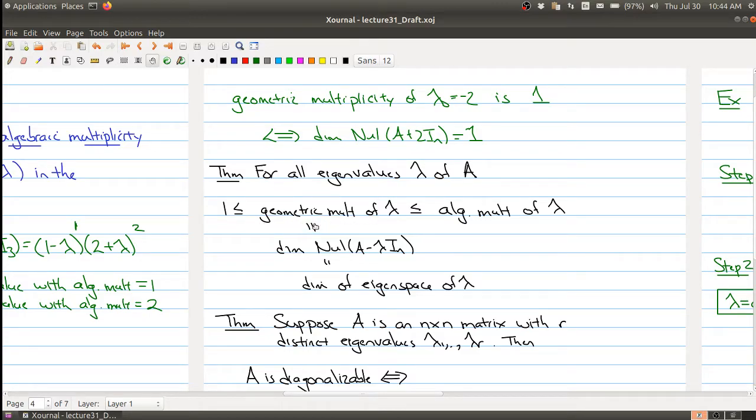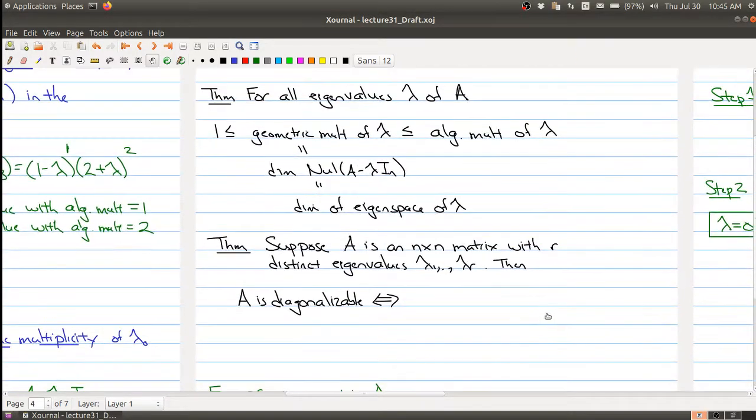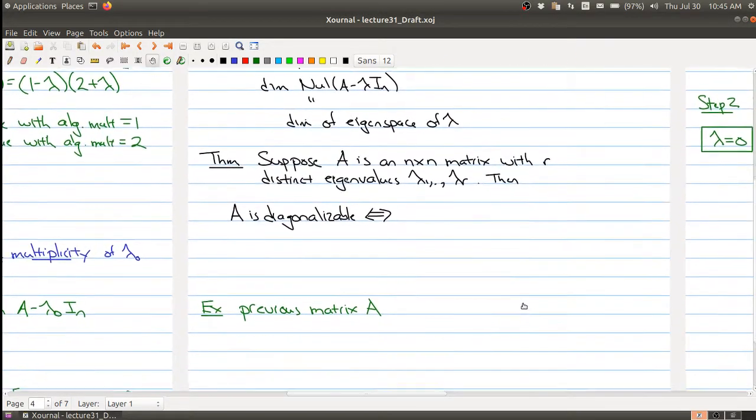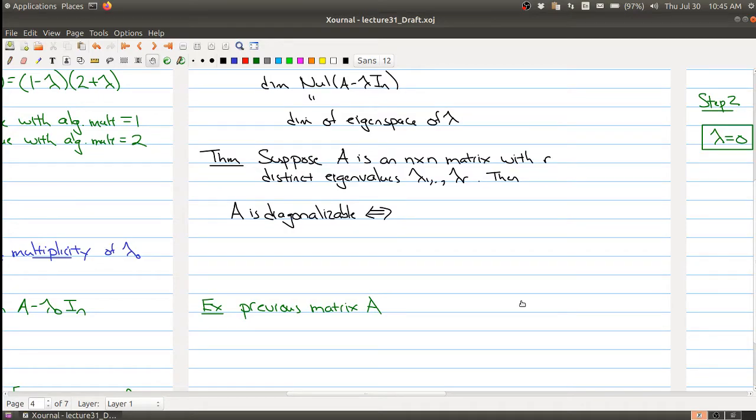The geometric multiplicity is always at least one and it's always less than or equal to the algebraic multiplicity. So what does this have to do with diagonalization? Well, this gives us another way to determine whether a matrix is diagonalizable or not.